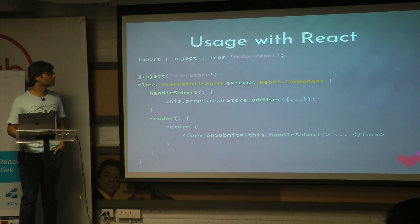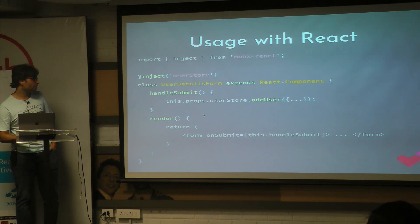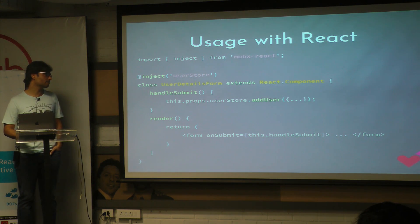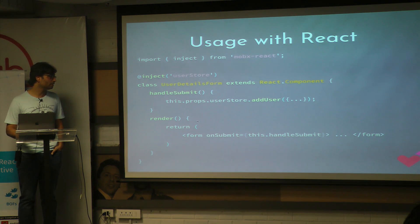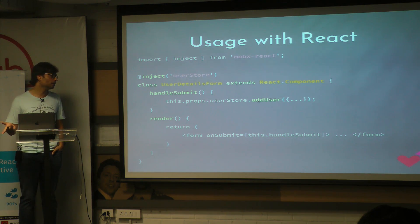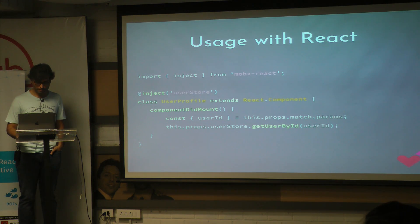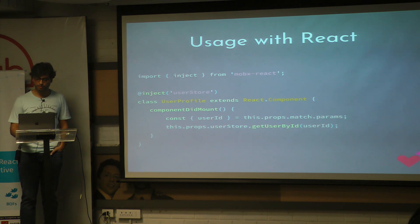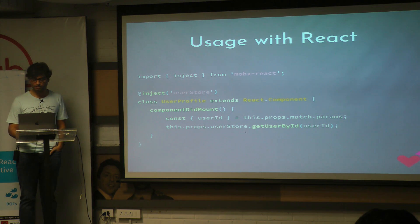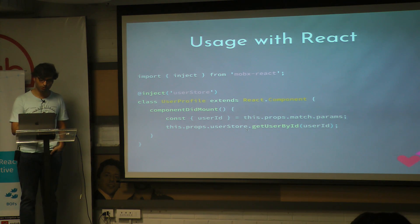Here is yet another example of how you can use this with React. Again, I'm injecting the user store, and basically this is how you would handle a form on a React component — you fill up the form, handle the submit, and because you have access to the store, you can call the addUser method on the store. This also shows an example of async data fetching from React itself — if you're using React Router, you can get the params, get the user ID, and pass that user ID to the user store to trigger a fetch.